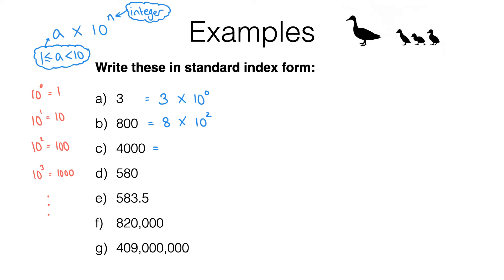Let's see the next one a little bit faster. We've got 4000. I need to find where I can put the decimal point to turn this into something between 1 and 10 — and that needs to go just after the 4, giving 4.000, which is the same as 4. I need to multiply that by 1000, which means 10 to the power of 3. Using the place-value method: 4 is just 4 units and to get it into the thousands column I need to move it 3 columns to the left, so I multiply by 10 to the power of 3.